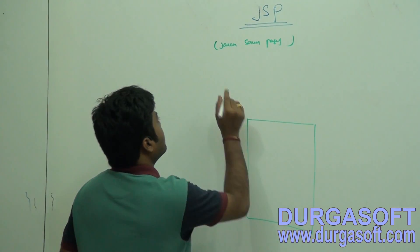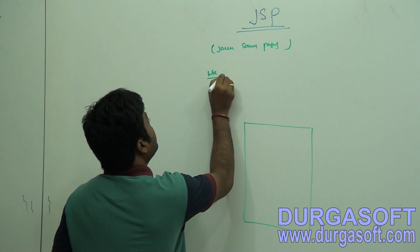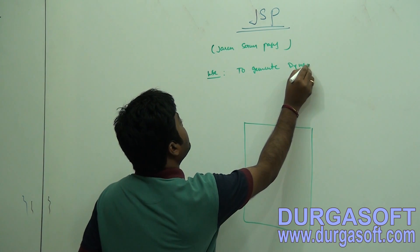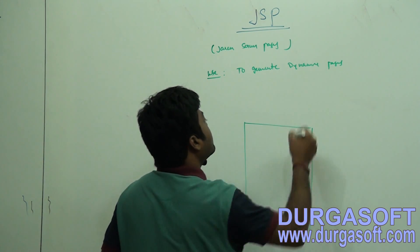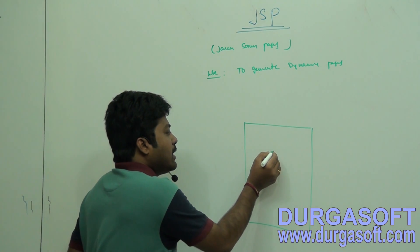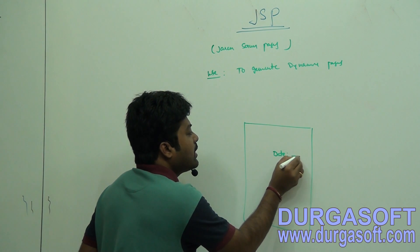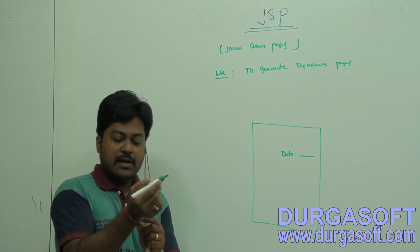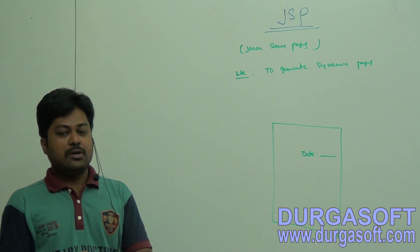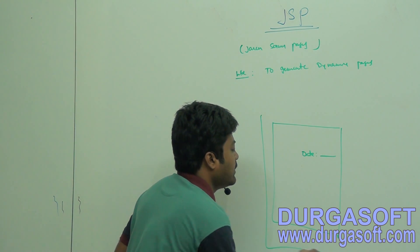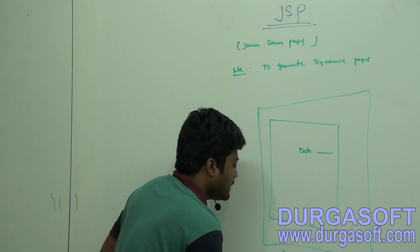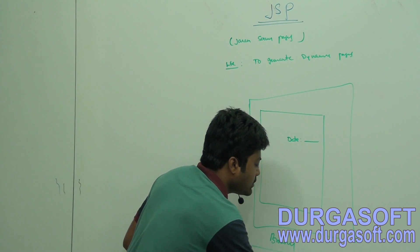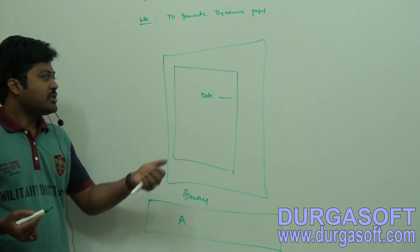The use case for JSP is to generate dynamic pages. For example, if you want to display a system date dynamically in the browser, you can display it using JavaScript or using JSP. If you use JavaScript, it executes on the browser machine. So if the browser is on machine A, it will display machine A's date.